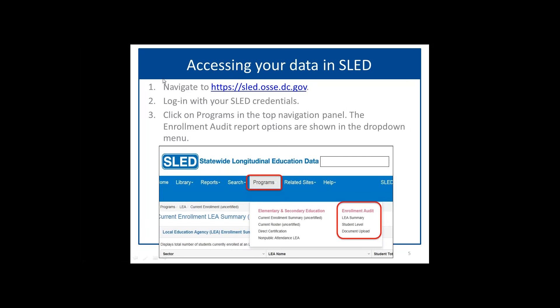Now I'm going to show you how to access your data in SLED. The data are published in the exact same place that data were published leading up to October 5th. You go to sled.dc.gov, log in with your SLED credentials, and then along the top navigation bar there's a drop-down menu for Programs. When you select that drop-down menu, you'll see Enrollment Audit, circled in red in the screenshot. From that, you can select the LEA summary or the student level.